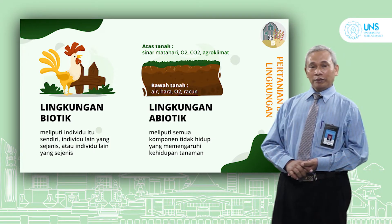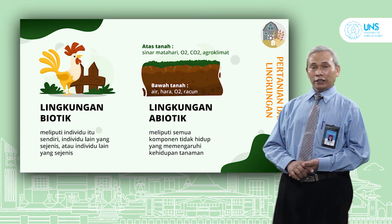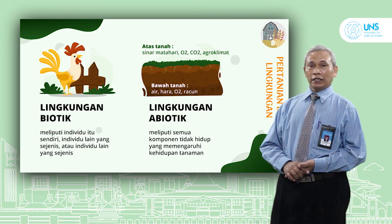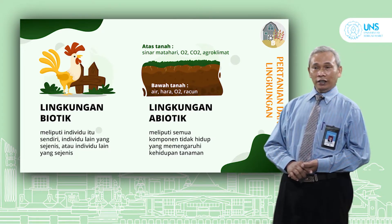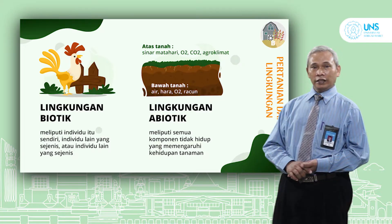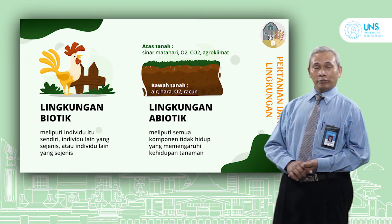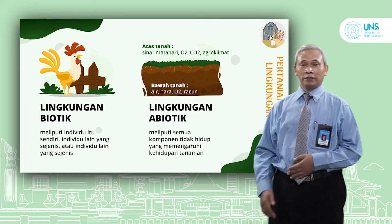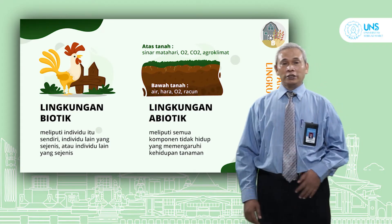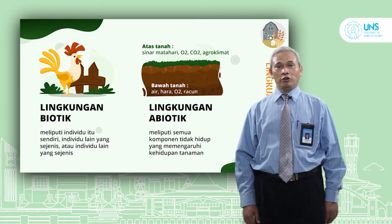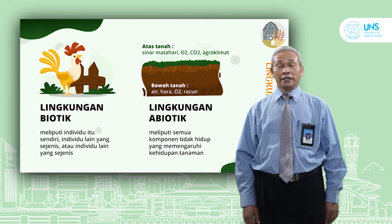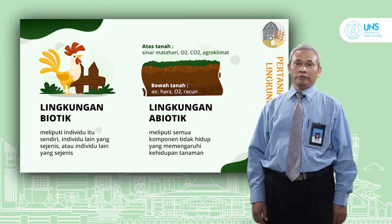Lingkungan abiotik bisa kita bedakan menjadi faktor yang ada di atas tanah dan faktor yang ada di dalam tanah. Yang di atas tanah meliputi sinar matahari, O2, CO2, dan agroklimat yang sangat dibutuhkan di dalam proses fotosintesis untuk menghasilkan asimilat. Kemudian yang di dalam tanah meliputi air, hara, oksigen maupun racun atau residu-residu yang ada di dalam tanah.